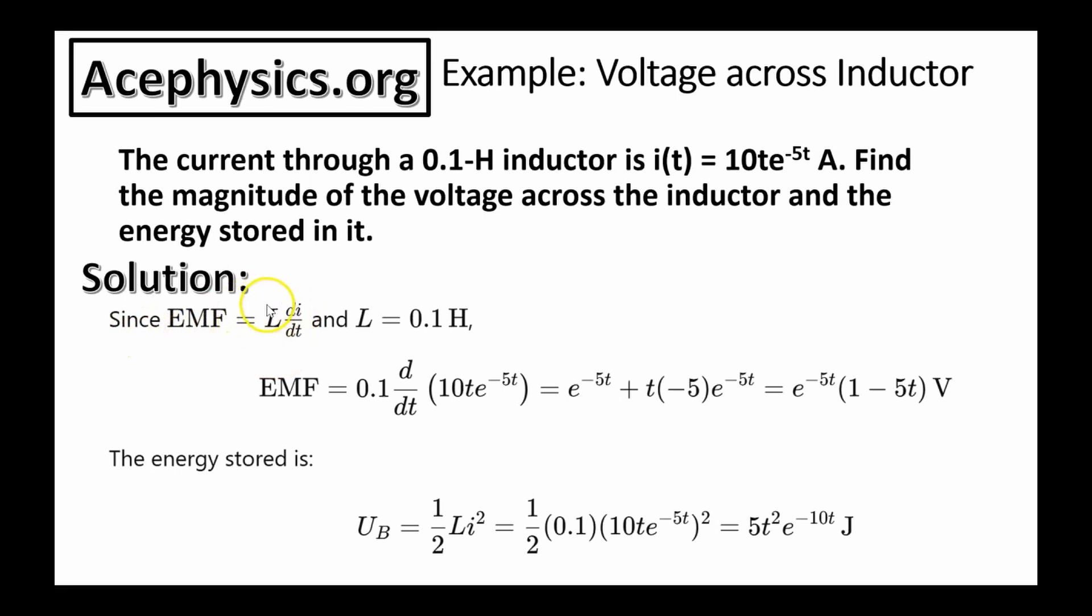Find the magnitude of the voltage across the inductor and the energy stored in it. The magnitude of EMF is equal to L di dt. We don't have to worry about the negative sign because it asks for the magnitude. So L is 0.1 Henry, so we have 0.1 times the time derivative of current. And this is the formula for the voltage across the inductor. The voltage across the inductor changes with time, and that's because the current changes with time.